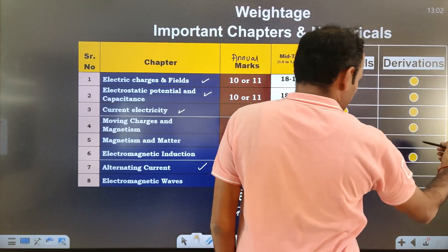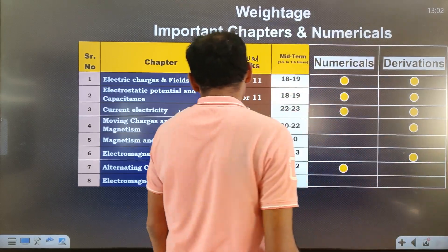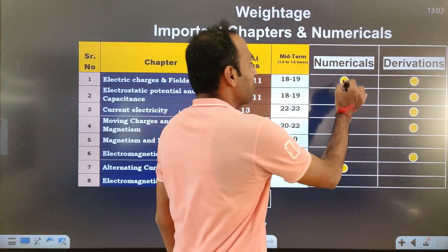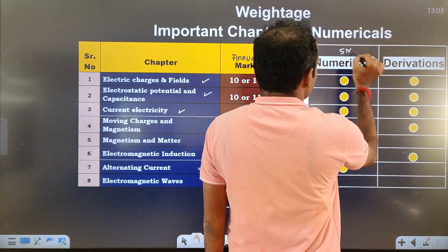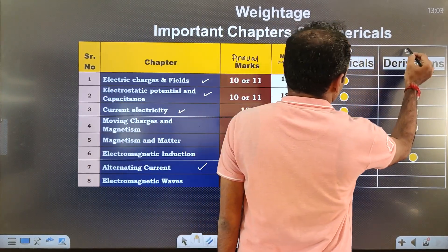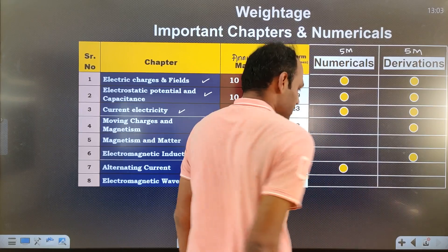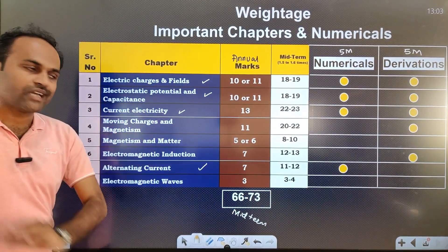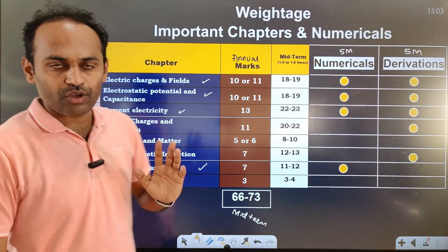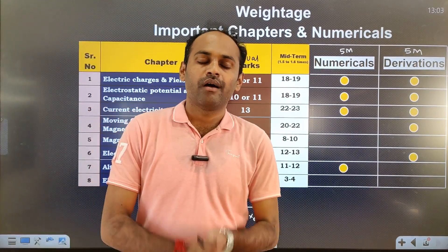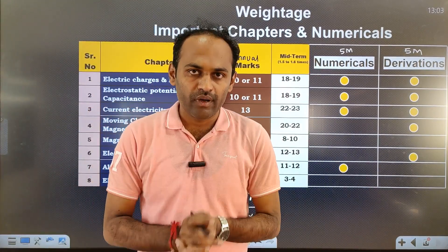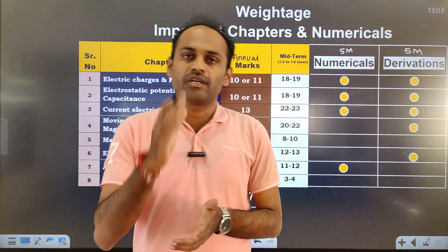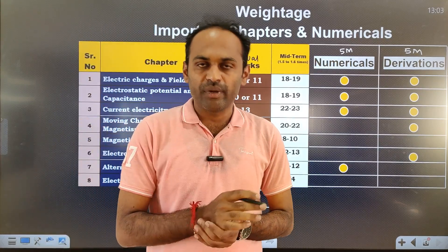Derivations come mainly from the first four chapters and Electromagnetic Induction, with 5 marks for numericals and 5 marks for derivations. That's all about midterm examination. I hope you have understood the message given in this video. Study well for your midterm examination.